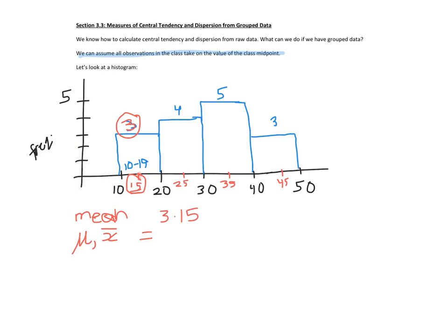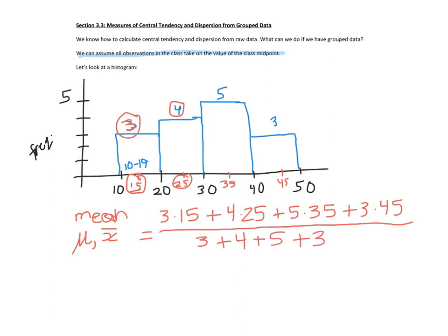We are assuming that all the observations in a class take on the class midpoint. So we are assuming that there are three observations with a value of 15. So we have to add up 15 three times. 15 plus 15 plus 15 to calculate the mean. But let's use multiplication. Multiplication is a shortcut to addition. And then likewise next, we're going to assume that there's four observations that have a value of 25. So we have to add up 25 four times. So that is adding up all the observations under our assumption.